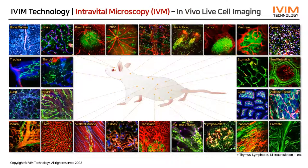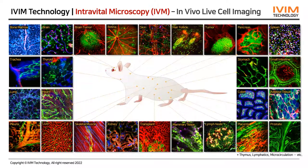iBeam's intravital microscopy has succeeded in high-quality live cell imaging in almost all internal organs in a live mouse model, as you can see in this slide. It includes brain, brain tumor, skin, lung, pancreas, spleen, GI tracts, prostate, lymph node, mammary tissue, placenta, kidney, liver, muscle, heart, and even retina imaging in vivo.